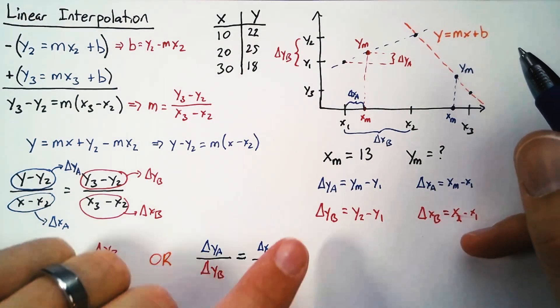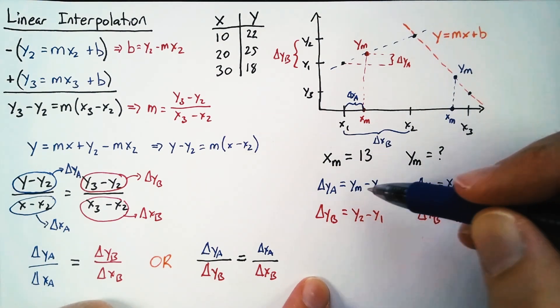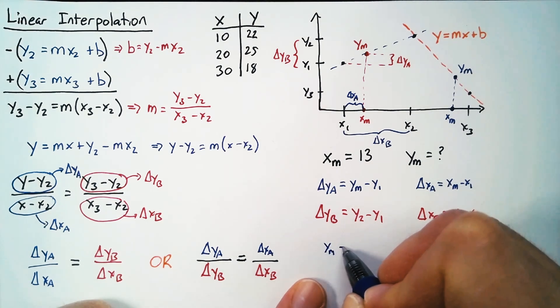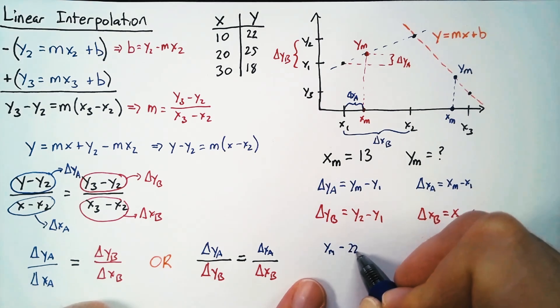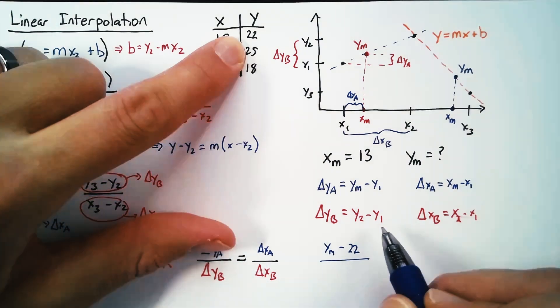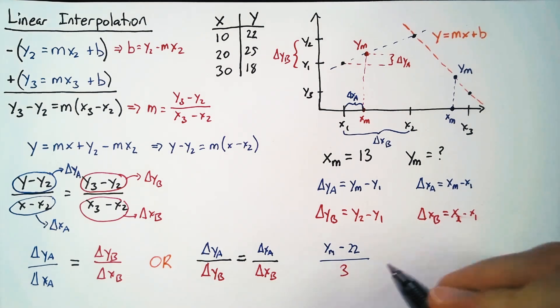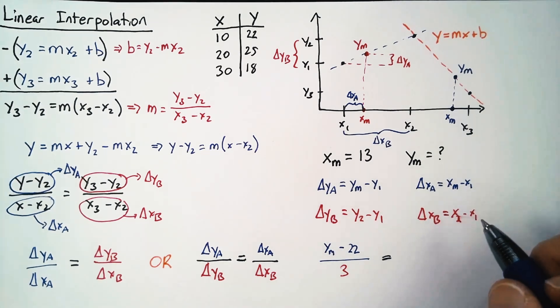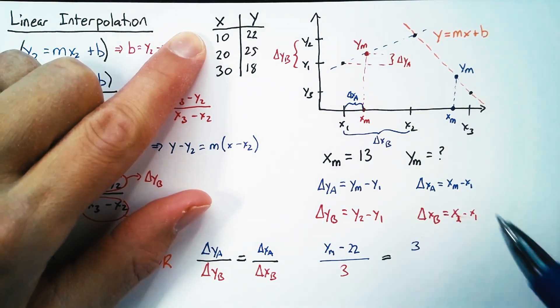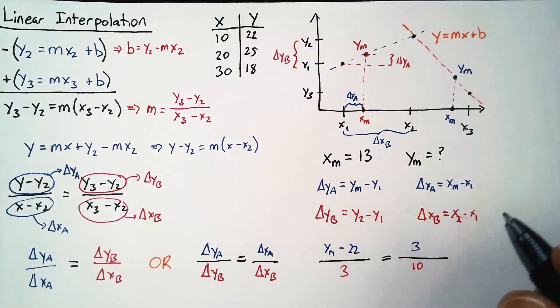So putting this all together, the only unknown is this delta ym. So we have to leave that one alone. But we get ym minus y1, and y1 was 22, divided by yb. This is y2 minus y1. We know both of those values. So that's 25 minus 22. That gets us 3. And that's going to be equal to xm minus x1. So that's this 13 value minus 10. So that's 3 again. And that's divided by x2 minus x1, which is 10.